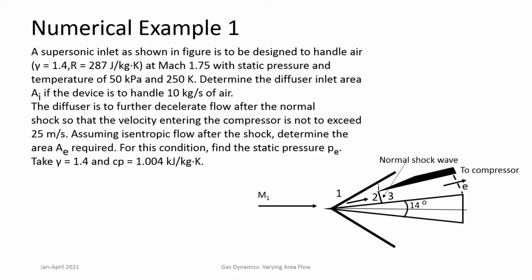First, this is a case of a diffuser — an intake diffuser. A supersonic inlet as shown in the figure is to be designed to handle air. Properties of air are given: gamma R = 287, at Mach 1.75. This is an entry Mach number of 1.75. Notice the kind of inlet described here: there is a wedge protruding into the flow. This is more in the lines of a mixed compression intake where there is external compression taking place by means of an oblique shock, and further there is internal compression also happening inside the duct.